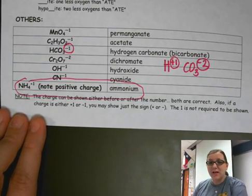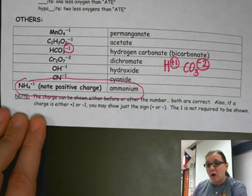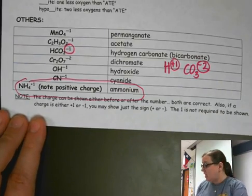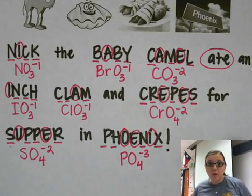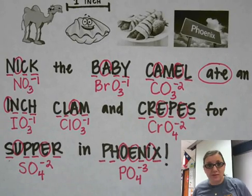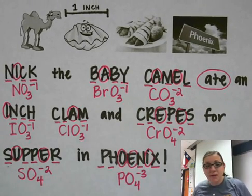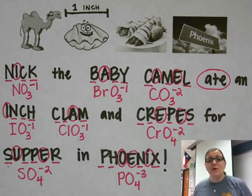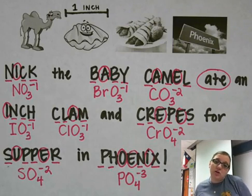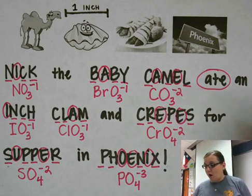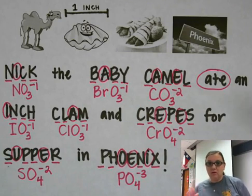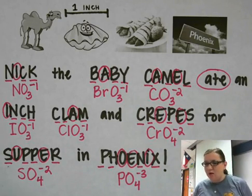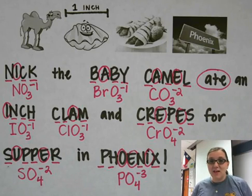Hopefully you've found this helpful to start getting used to memorizing those polyatomic ions. Remember our little saying: 'Nick the baby camel ate an inch clam and crepes for supper in Phoenix' — and those pictures totally make sense now: the camel, the clam, the crepes, the phoenix. Flashcards work well too, but I find this saying most helpful for remembering all those charges and number of oxygens. Remember: consonants are your oxygens, vowels are your charge. Good luck, and I'll see you in class!